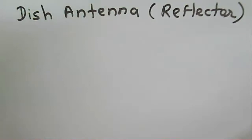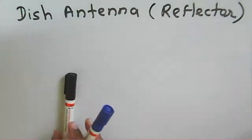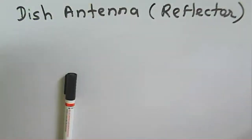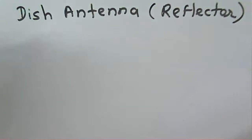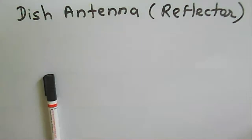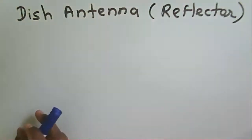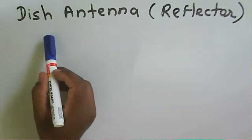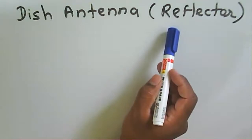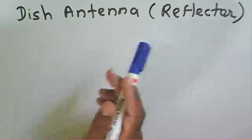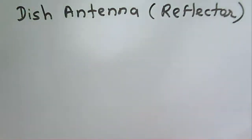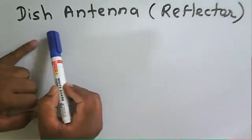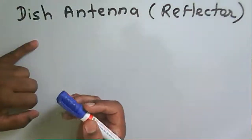Welcome to the microwave communication course. Today we see a dish antenna or a reflector antenna. We have seen that a horn antenna is an extended version of a waveguide where one end is flared — that structure is called a horn antenna. That horn antenna is used as a primary antenna for the reflector antenna. The reflector antenna reflects the signal from the structure, which is why this antenna is called a reflector antenna. This metallic structure reflects the microwave signal.